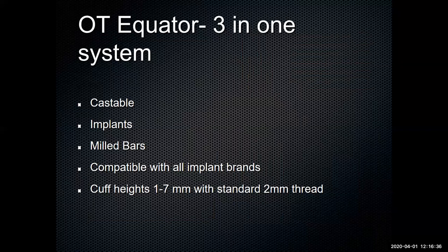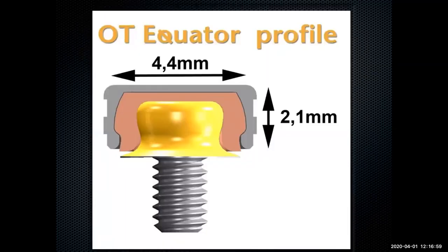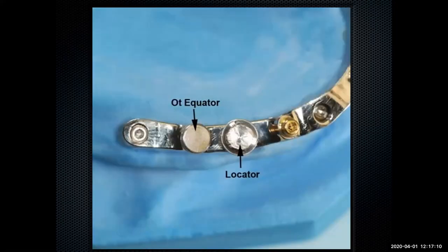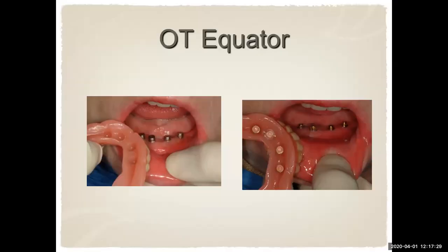One of my favorite attachment systems is the OT Equator — it's a three-in-one system. It's castable like the locator attachments, for implants and mill bars, compatible with all implant brands, with cup heights from one to seven millimeters with a two-millimeter thread. We'll have that thread drilled into the bar and utilize those abutments, which have a smaller profile. If you're limited on room, this is a good attachment to go with — it's a slightly smaller profile than the locator. The retentive values are very close between the equator and the locator.